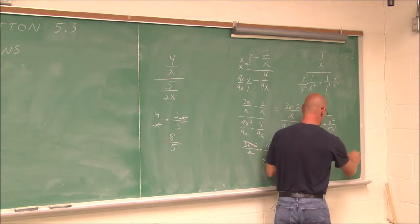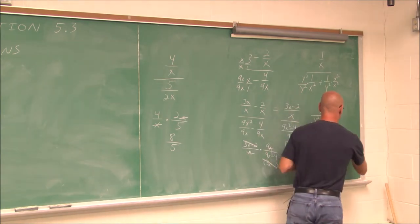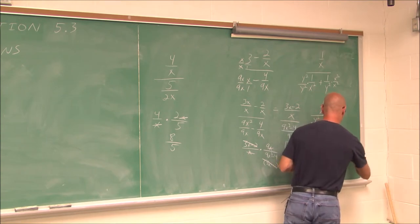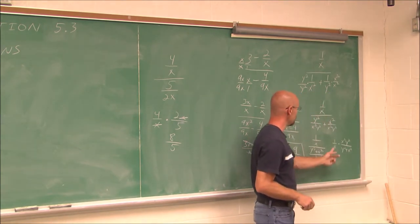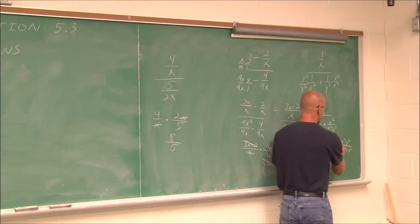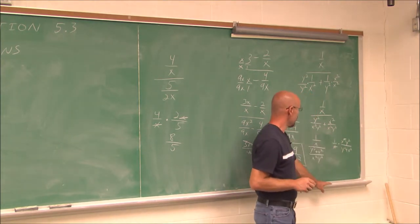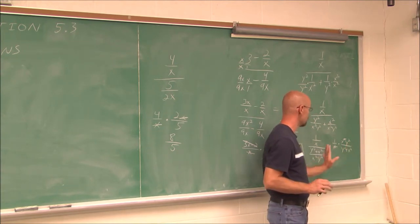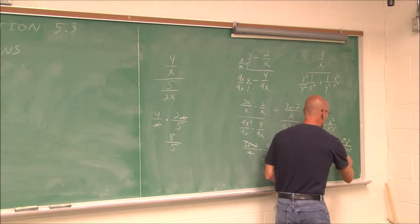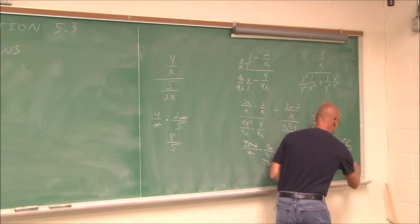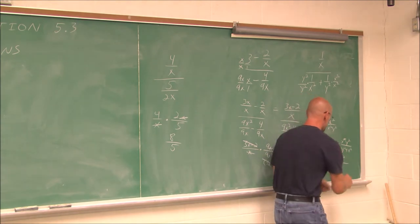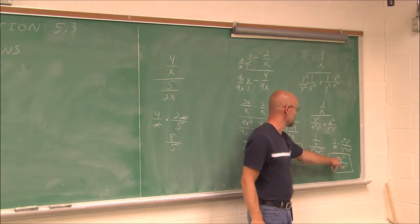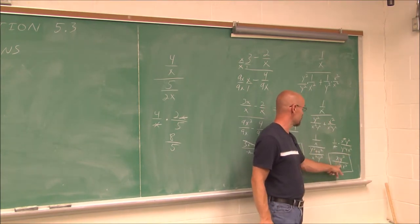Now we have a single fraction divided by a single fraction, so we can multiply by the reciprocal: 1 over x times x²y² over (y² plus x²). Now we reduce — one of the x factors cancels one of the x factors. Nothing else cancels, because these are terms, not factors. So we rewrite it as xy² over (y² plus x²). That is the simplified solution.